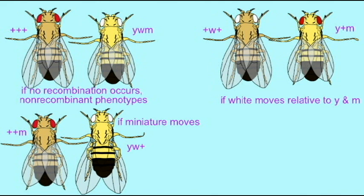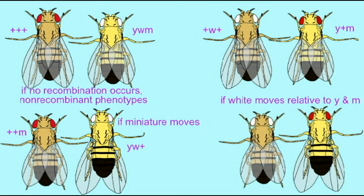Finally, if the gene miniature moves relative to the other two genes, then there would be flies which have miniature wings and that's their only mutant condition. There would be other flies which have yellow bodies and white eyes but not miniature wings. All of the flies other than the wild type and the yellow-white-miniature flies would be known as the recombinant flies, because the only way of getting these phenotypes is as a result of crossing over in meiosis.